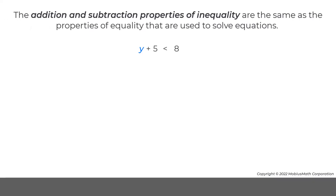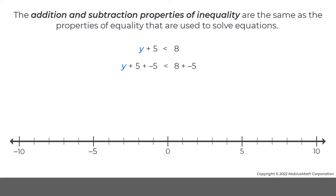The addition and subtraction properties of inequality are the same as the properties of equality that are used to solve equations. For example, negative 5 can be added to both sides of this inequality without changing the set of values that makes the inequality true.